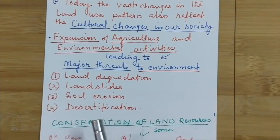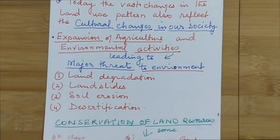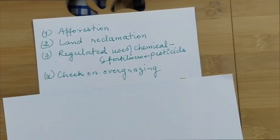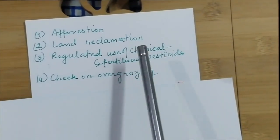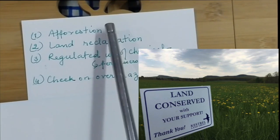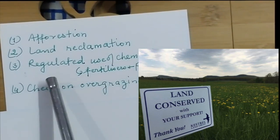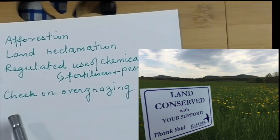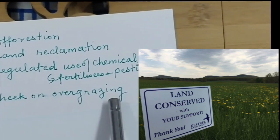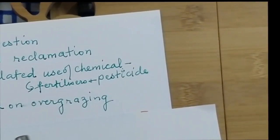Now we come to how to conserve our limited land resources. Conservation methods include: one, afforestation — we should grow more trees; two, land reclamation; three, regulated use of chemicals like fertilizers and pesticides; and four, check on overgrazing. In the next video, we'll talk about soil.